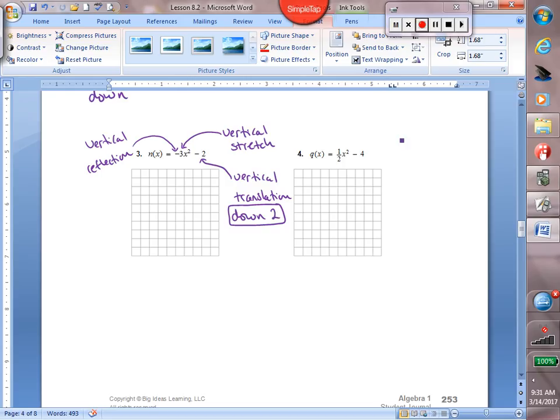Last but not least, question four. We have one half times our x squared. One half is smaller than one, so it causes a vertical shrink. Or again, if you prefer the word compression instead of shrink, that's fine.